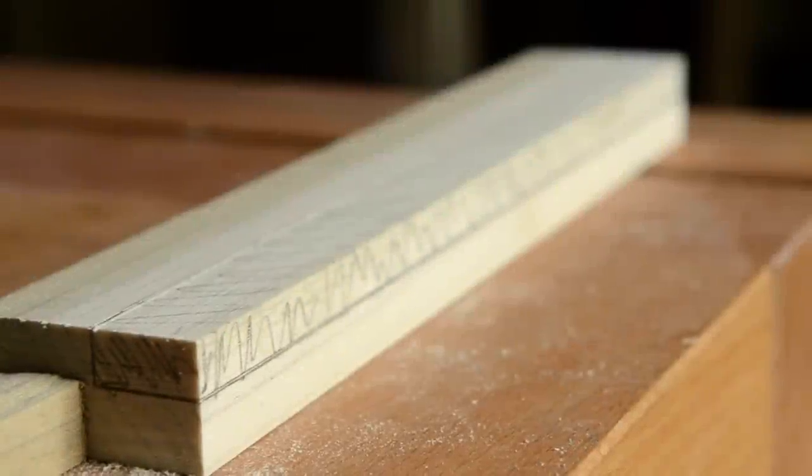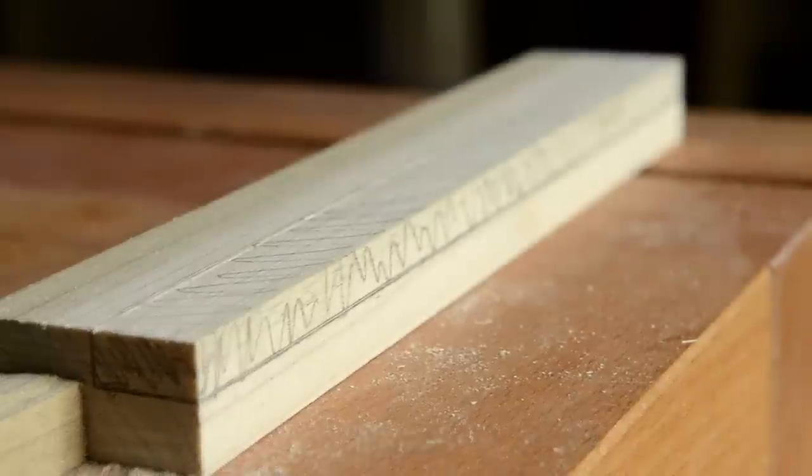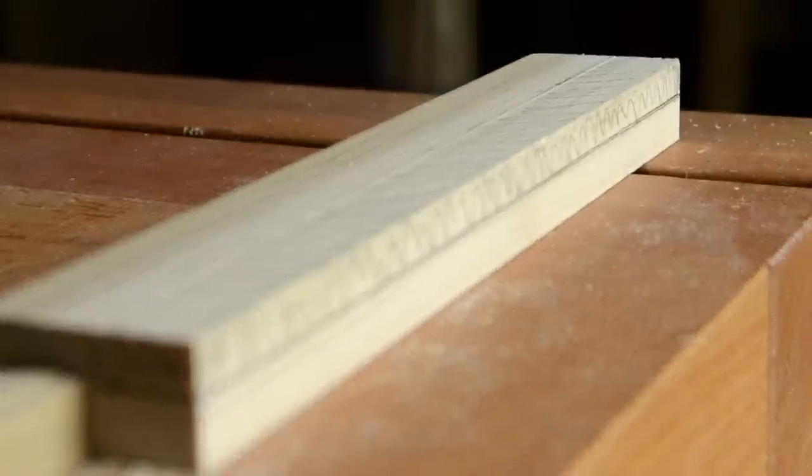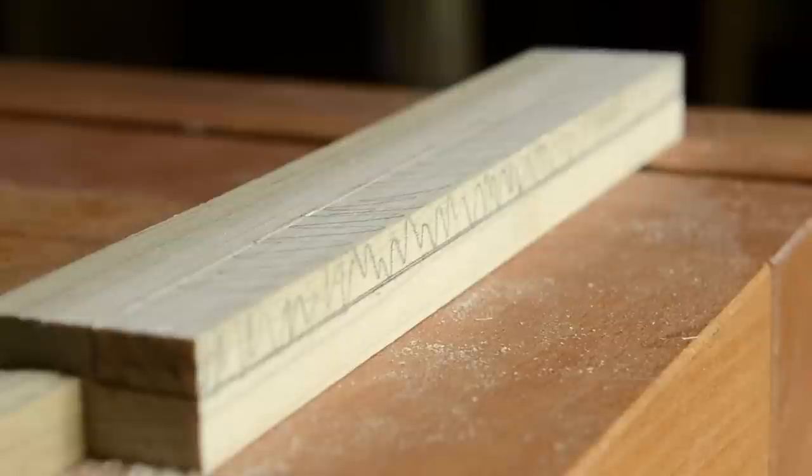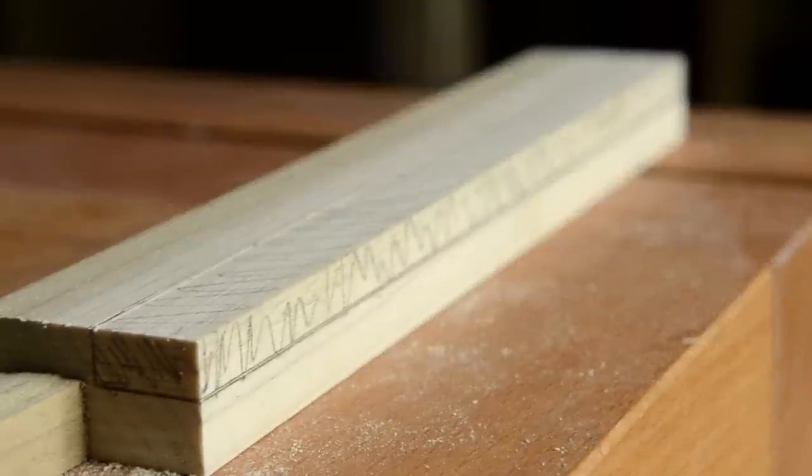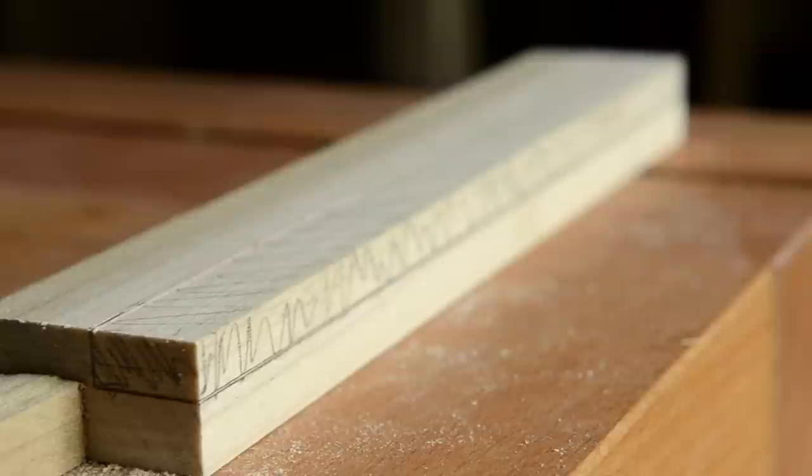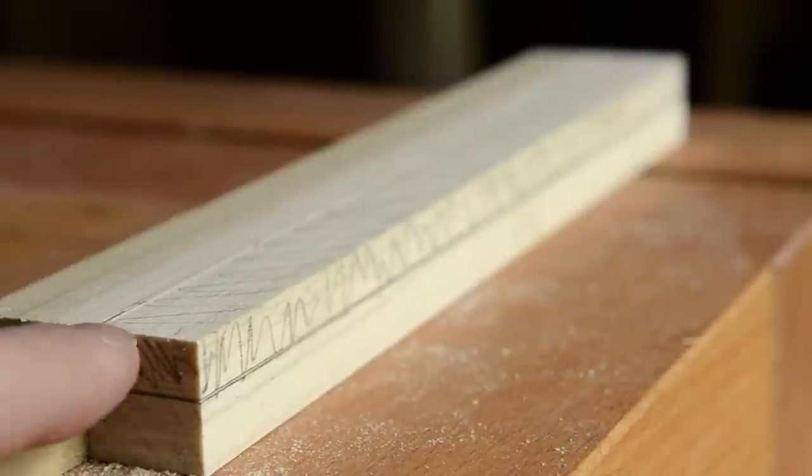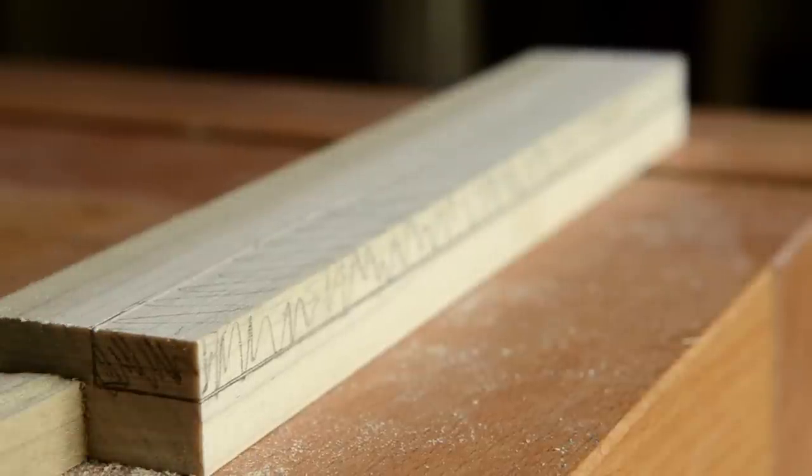So let's get started. You can see I started out here marking with the marking gauge where I wanted my rabbit to go. This is particularly useful if you're cutting moldings by hand with hollows and rounds to take off a big chunk before you put in the hollow or whatnot.